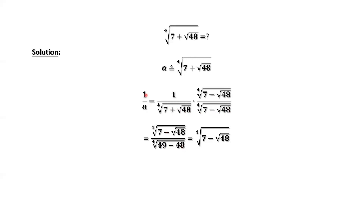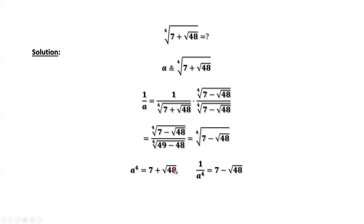This implies 1 over A equals the fourth root of 7 minus square root of 48 — the only difference from A is the plus/minus sign. For A, we take the fourth power on both sides to get rid of the root sign: A to the power of 4 equals 7 plus square root of 48. We do the same for 1 over A — taking the fourth power on both sides gives 1 over A to the power of 4 equals 7 minus square root of 48.